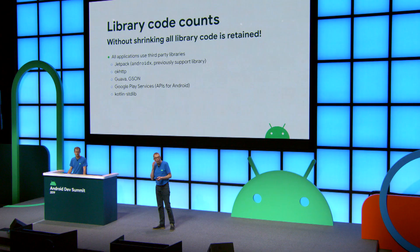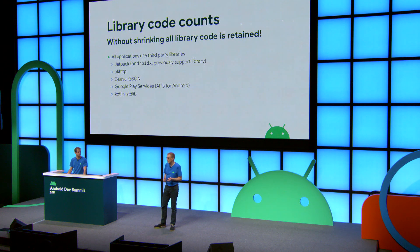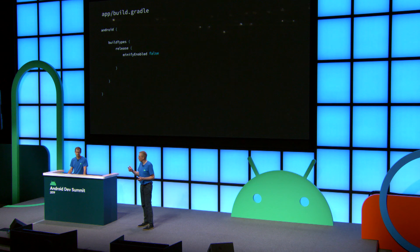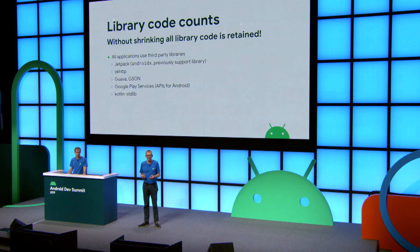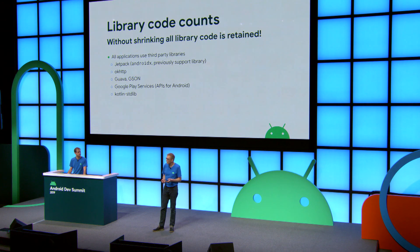Library code counts. Without any shrinking, all library code is retained in your app. Here's a list of popular third-party libraries: the Jetpack or AndroidX libraries are used by pretty much all applications. OKHttp is a very popular networking library. Guava, JSON, and the Google Play services are frequently used Google-provided libraries. Note that the Kotlin standard library is also on this list, because if you're writing an app in Kotlin, the Kotlin standard library becomes part of your application.